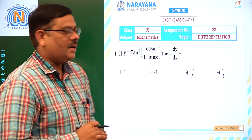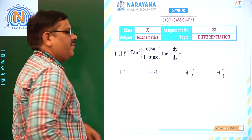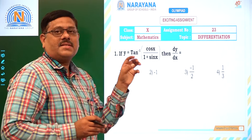If y is tan inverse of cos x by 1 plus sin x, what is the value of dy by dx? Using the derivative of inverse trigonometric functions we can do it. But here the cos x by 1 plus sin x function can be further simplified. How can you simplify that?